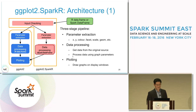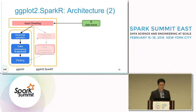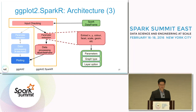The plotting stage, which is common for both R and Spark inputs, draws the graph on the display window. When the input is an R data frame, the three stages in ggplot2 are executed as usual.